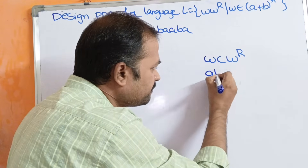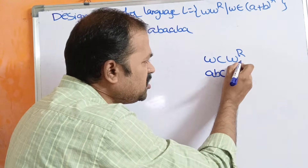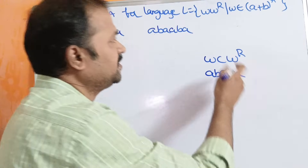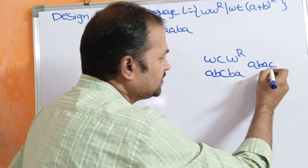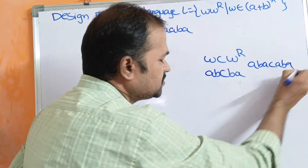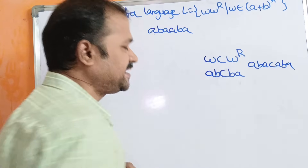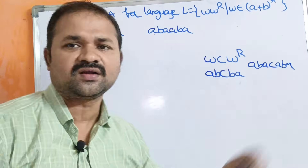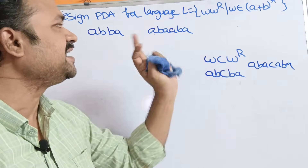If we let W be AB, then W^R is BA. Likewise if W is ABA, then W^R is ABA. So the length of WCW^R with W=AB is 5 characters, and with W=ABA is 7 characters. WCW^R is an example for odd-length strings, whereas WW^R is an example for even-length strings.